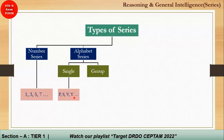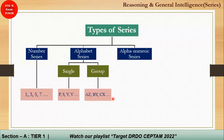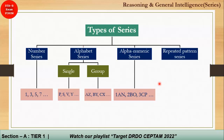The next type is group alphabet series, where a group of alphabets is given and you need to determine the next pattern. Then there is alphanumeric series, which is a combination of both number series and alphabet series. Finally, a less common type is the repeated pattern series, where some pattern is given with missing characters or numbers that you need to determine.